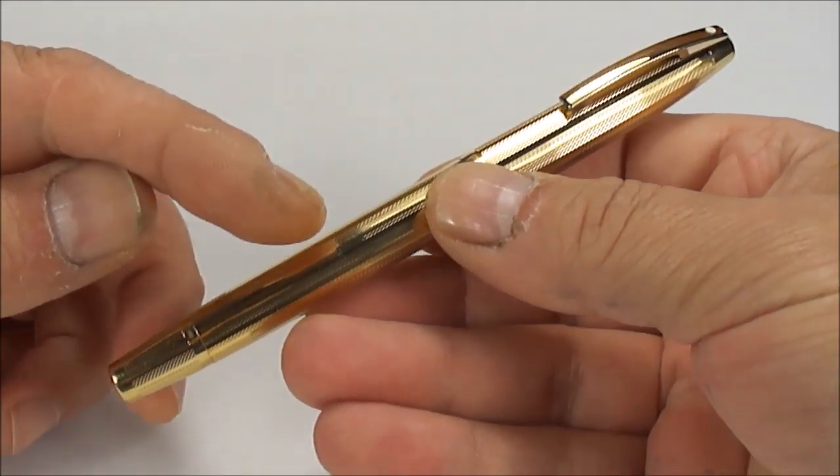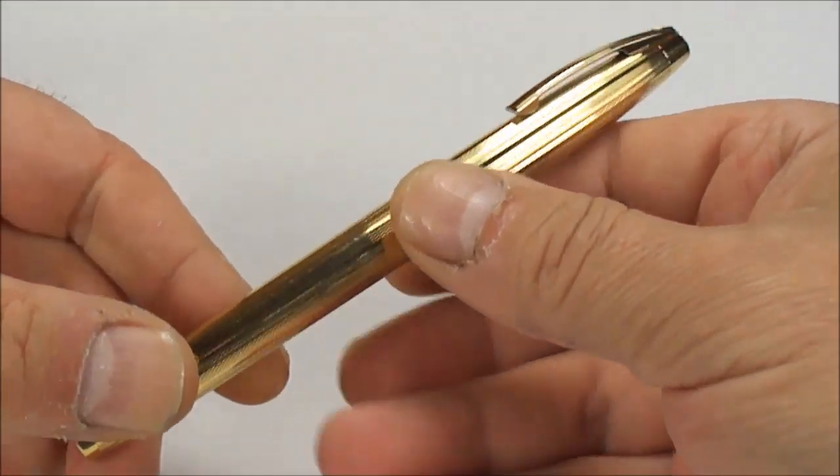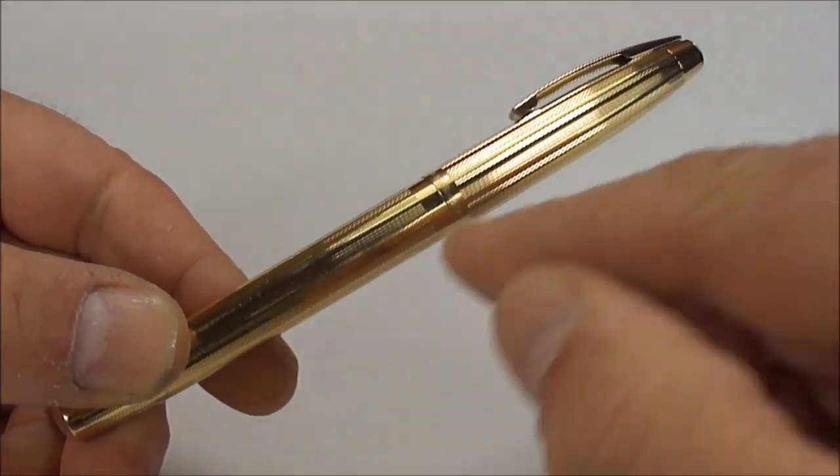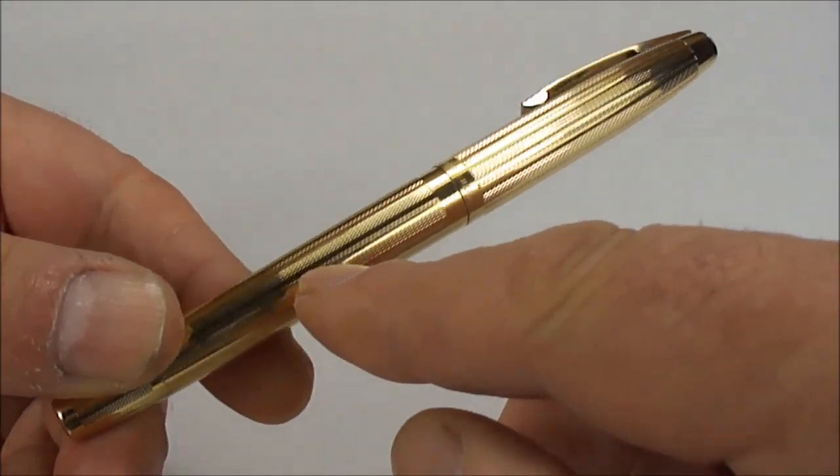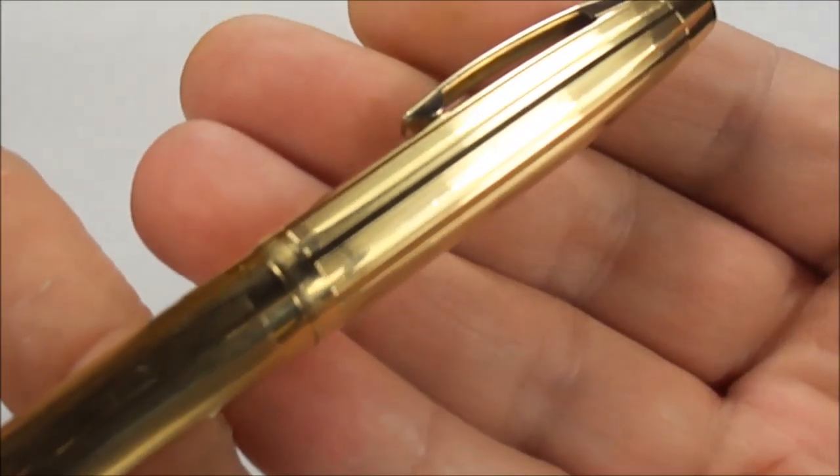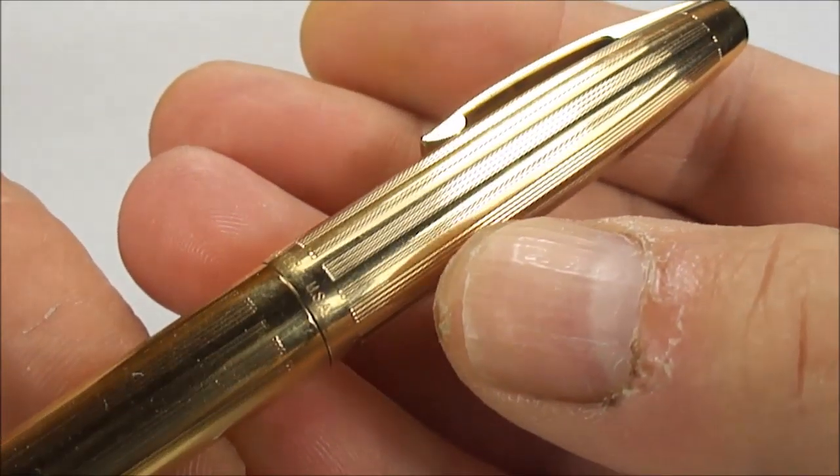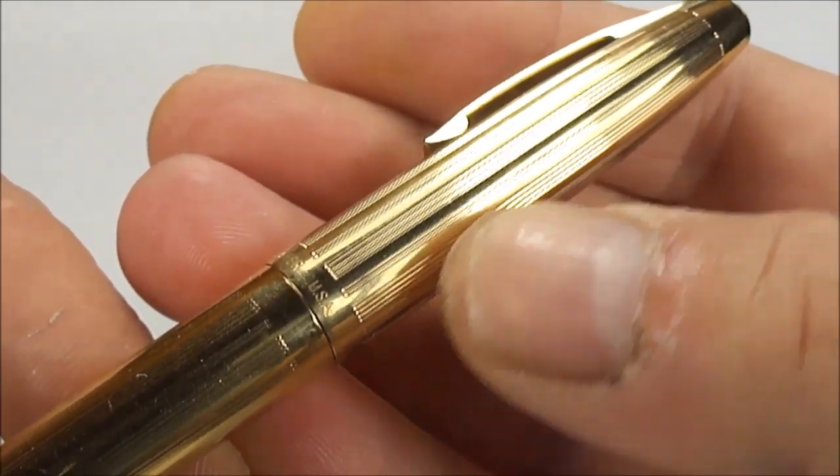Now this model comes with a 12 carat gold filled cap and barrel, and both the cap and the barrel have got this line pattern, which is actually four lines bunched together, then two, then four, two, and so on.